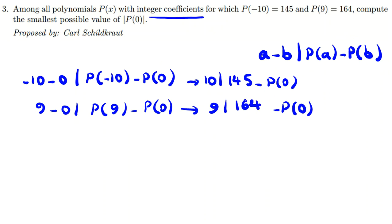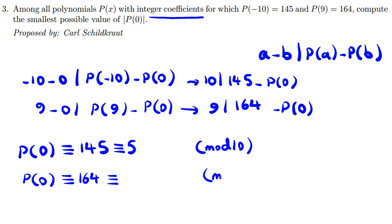So two important tools in number theory: one is divisibility, one is congruency. You can solve 90% of the problems of number theory from qualifying level up to IMO with knowing how to work with these two important tools. In this problem, I want to use both. So by this one, if I change it to congruency, P(0) is congruent to 145 mod 10, which is 5. And P(0) mod 9. Here 164, if you consider mod 9, this number is 6+4=10, 10+1=11, which is 2.